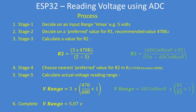Here's the design process in summary. First, decide on an input range — we'll use 5 volts. Then decide on a preferred value for R1; I use 470 kilohms because it reduces constant load drain on a battery, typically drawing about 5 microamps. Next, calculate R2 as 3 times 470k divided by (input range minus ADC maximum voltage), giving 705k. Choose the nearest preferred value of 680k, then back-calculate the actual range, which comes out to 0 to 5.07 volts.